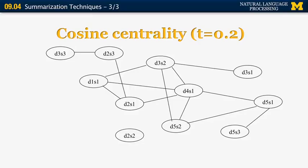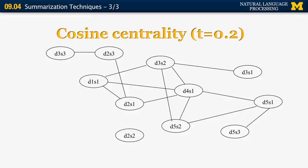If we lower the cutoff for cosine similarity to 0.2, we're going to see much better structure. In fact, it will be very obvious at this point that sentence D4S1 is very highly connected to the rest of the graph, whereas sentences like D2S2 and D3S1 are not as highly connected.